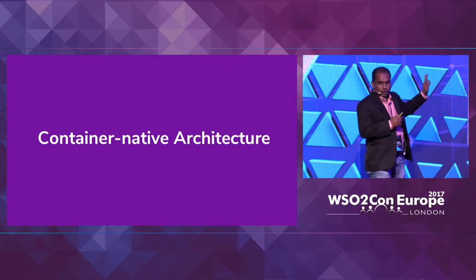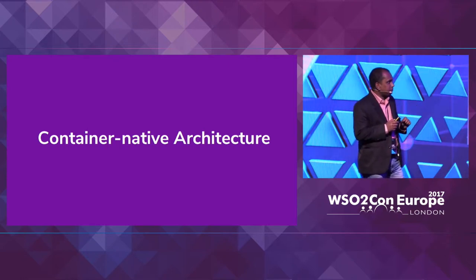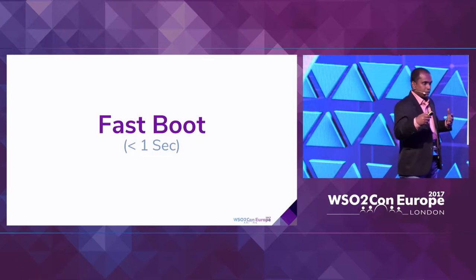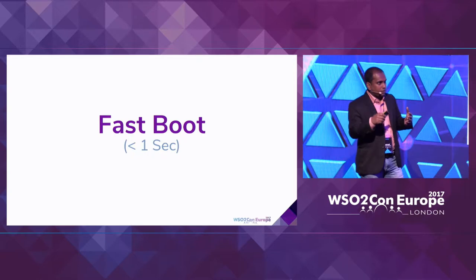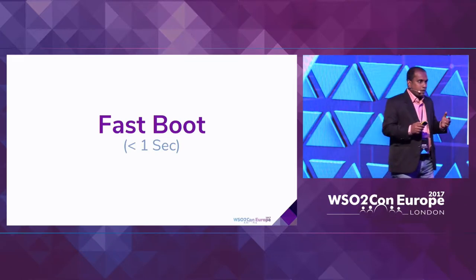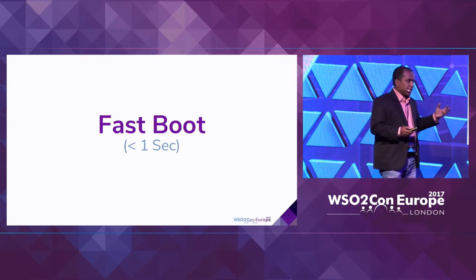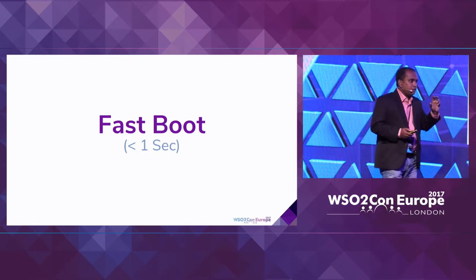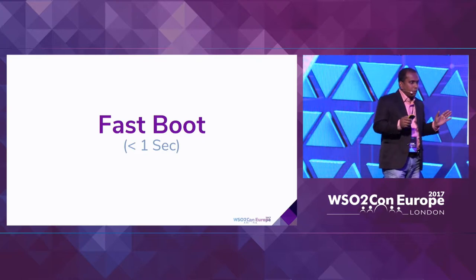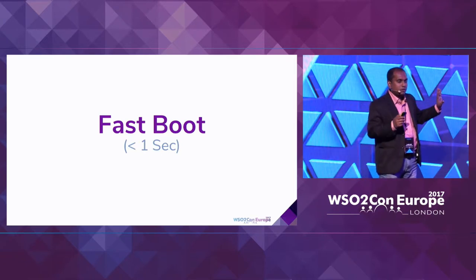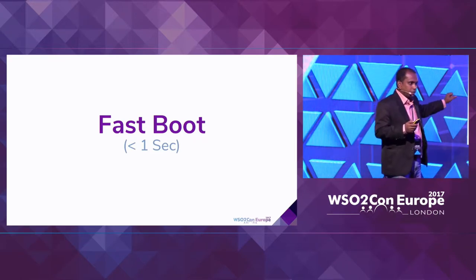One way to do this is container-native architecture. I will explain these container-native architecture features. The first is fast startup. In microservice architecture, we are talking about scaling fast with small services. If you can boot up a service within one second, you can easily scale up. From an operations point of view, we are optimizing resources — because we can scale fast, whenever we get load, we can scale up. The same applies in serverless architecture, where applications can be created on the first request.